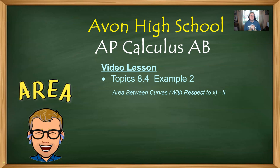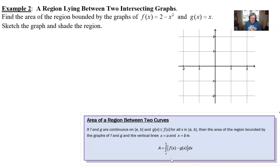Welcome back AP Calc AB students. Mr. Record here from Avon High School. We're going to take a look at our second example covering topic 8.4. We're still talking about the area between curves. Find the area of the region bounded by the graphs f(x) = 2 minus x squared and g(x) = x.